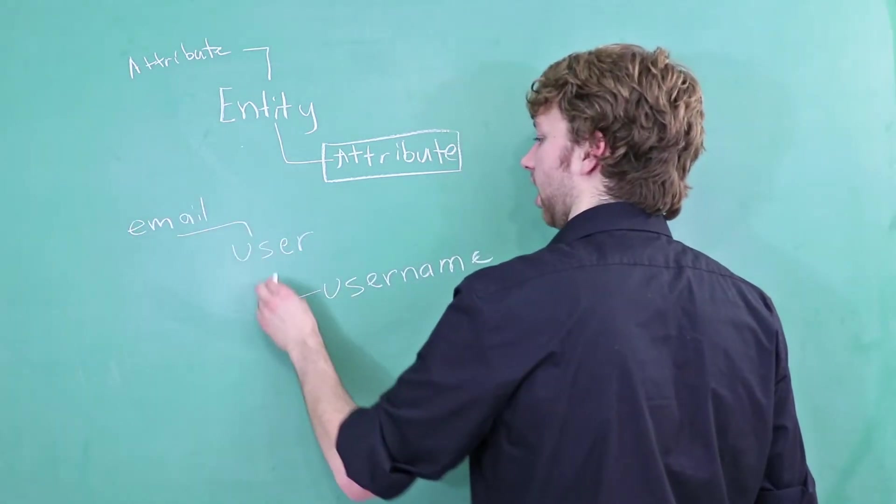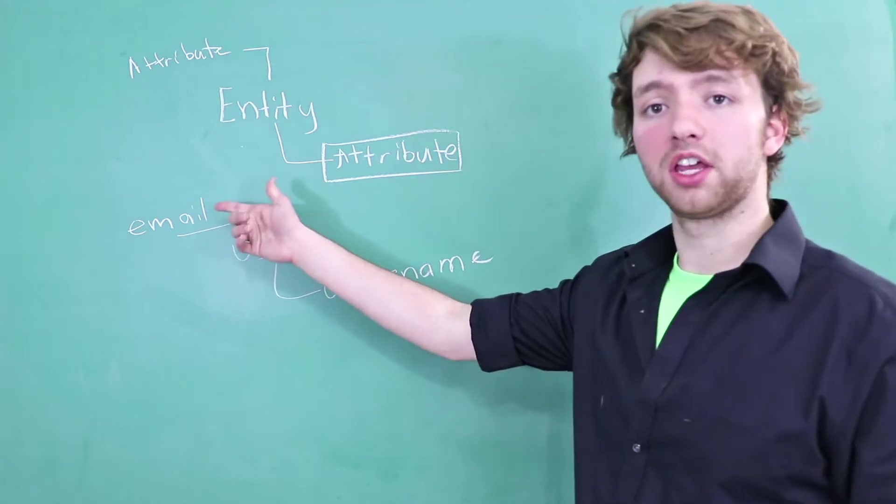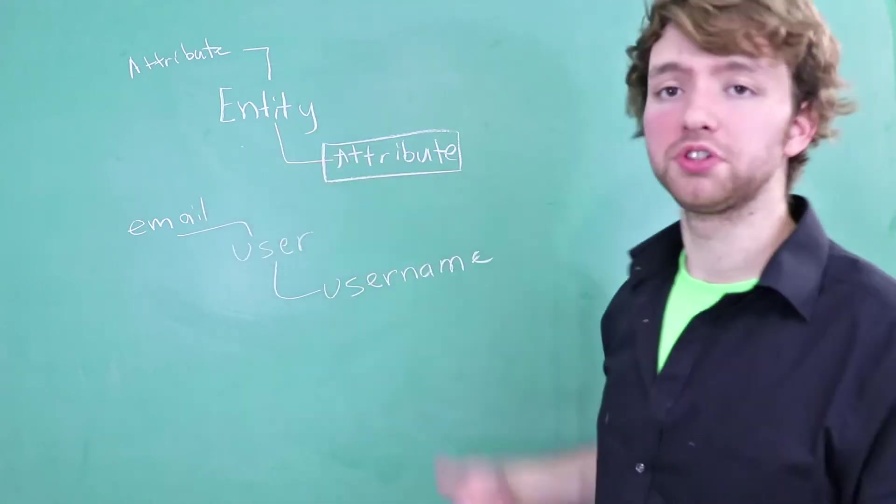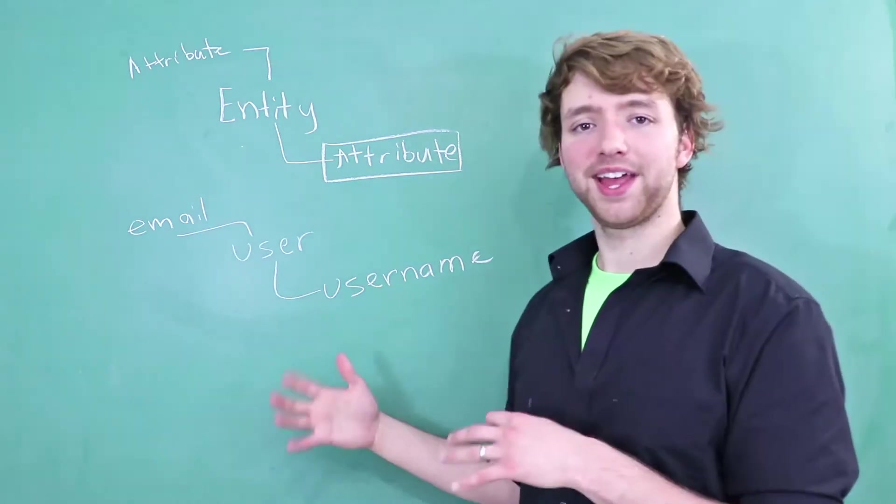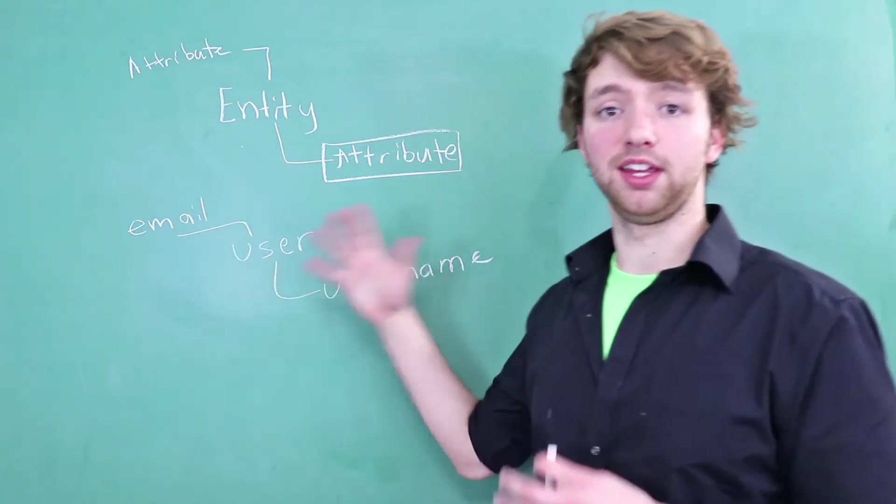These obviously describe the user. The email that we're talking about depends on what user we're talking about. The username depends on what user we're talking about. So that kind of breaks down the whole dependency thing inside of databases.